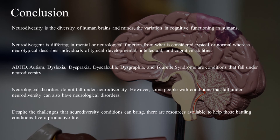In conclusion, neurodiversity is the diversity of human brains and minds — the variation in cognitive functioning in humans. Neurodivergent refers to differing in mental or neurological function from what is considered typical or normal, whereas neurotypical describes individuals of typical developmental, intellectual, and cognitive abilities. ADHD, autism, dyslexia, dyspraxia, dyscalculia, dysgraphia, and Tourette syndrome are conditions that fall under neurodiversity. Neurological disorders do not fall under neurodiversity; however, some people with neurodiverse conditions can also have neurological disorders. Despite the challenges that neurodiversity conditions can bring, there are resources available to help those battling conditions live a productive life.